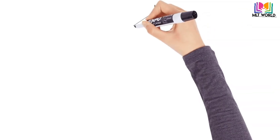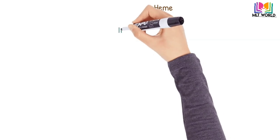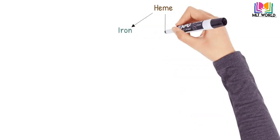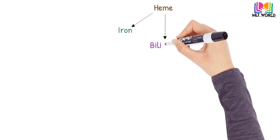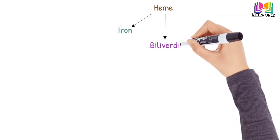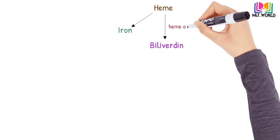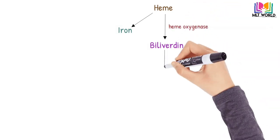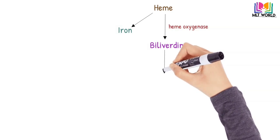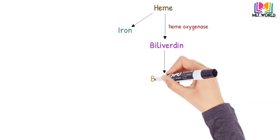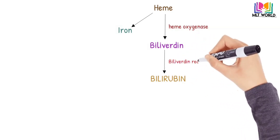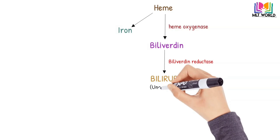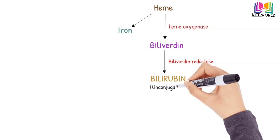The heme component will be converted into two things: one is iron and the other is biliverdin. This reaction is catalyzed by the enzyme called heme oxygenase. With the help of heme oxygenase, heme converts into biliverdin, and then biliverdin again converts into bilirubin — a yellow compound — and this reaction is catalyzed by biliverdin reductase.